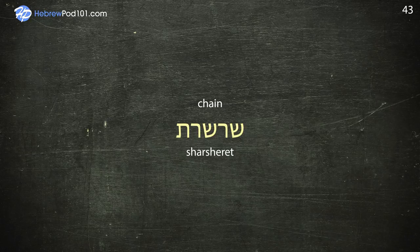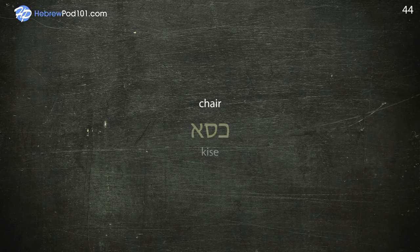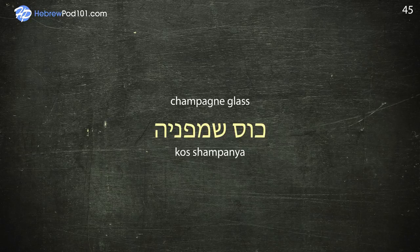Chain — Sharsheret. Chair — Kiseh. Champagne Glass — Kose Champagne.